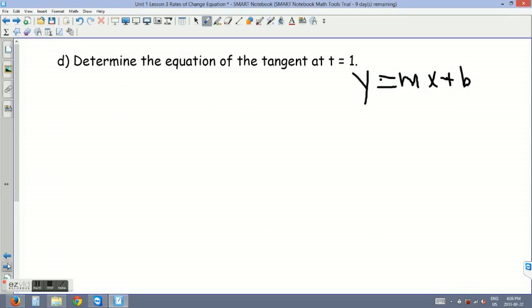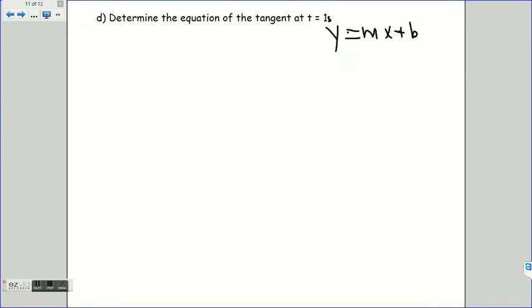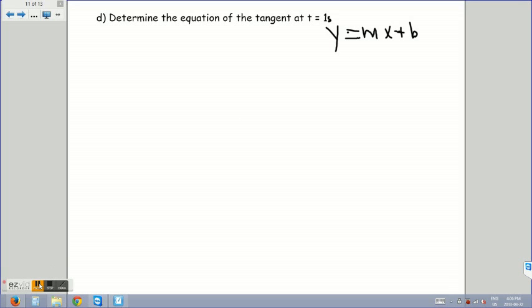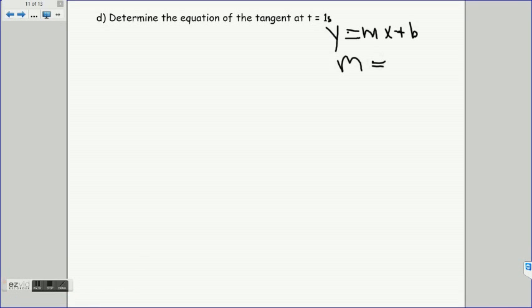Let's take a look at part d. We want to determine the equation of the tangent at t equals 1 second. Now remember a tangent and a secant are lines. They're straight lines. That means that we can come up with an equation that describes the straight line. In doing so, remember, let's recall way back to grade 9. Y equals mx plus b. That is our general equation of any line. When coming up with this equation, we always want to find what m is, and then of course what b is. So those are the two things that we need to find.